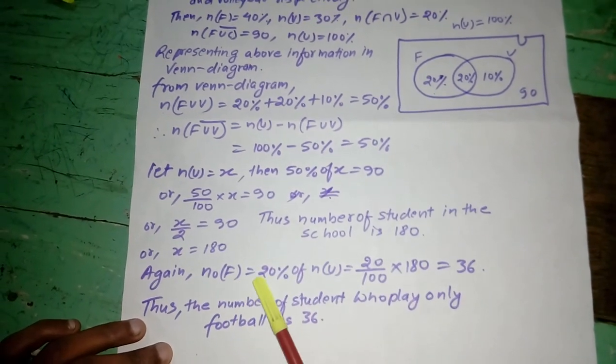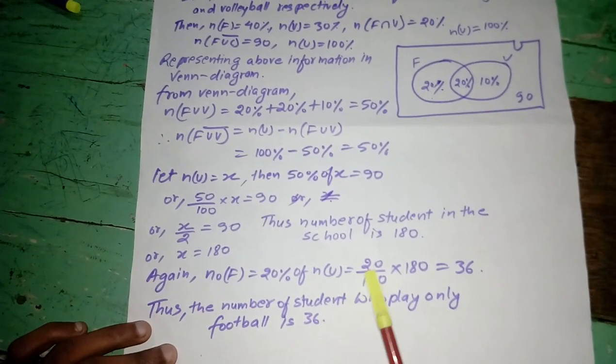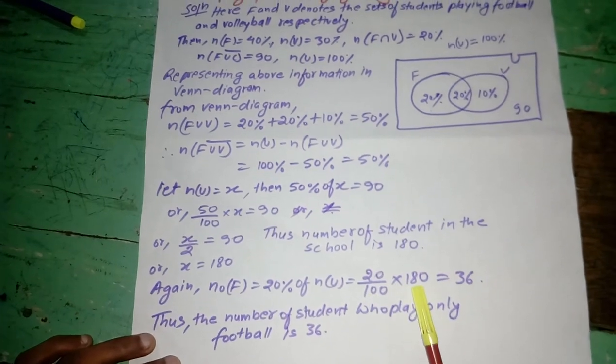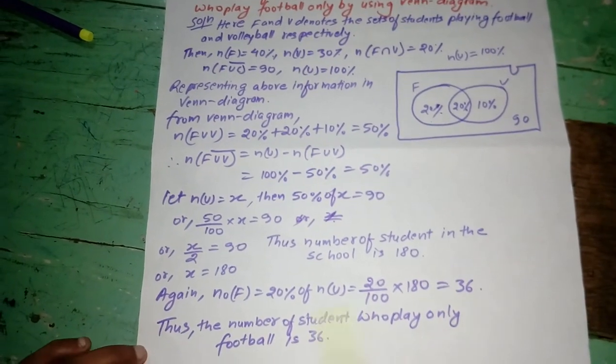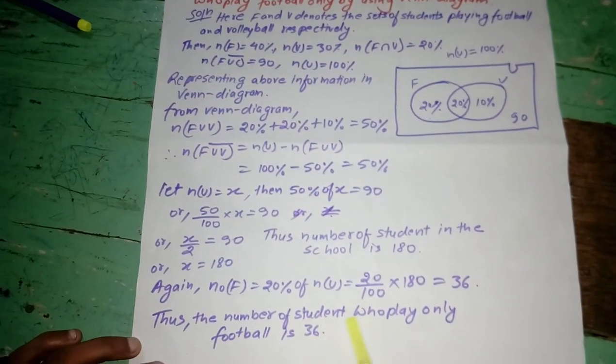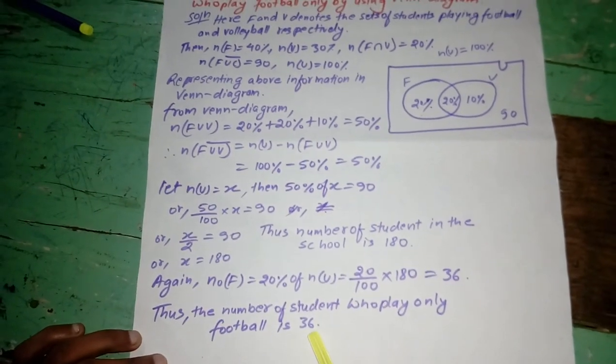Again, n(only F) is equal to 20% of n(U) is equal to 20 by 100 into 180 is equal to 36. Thus, number of students who play only football is 36.